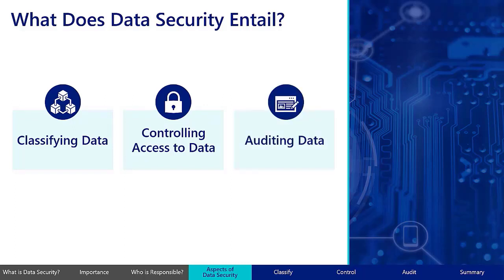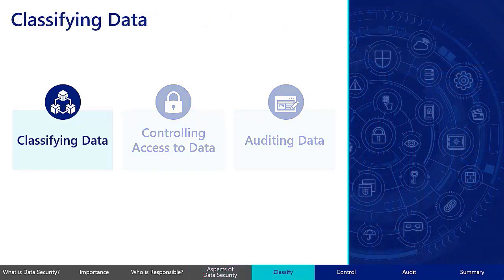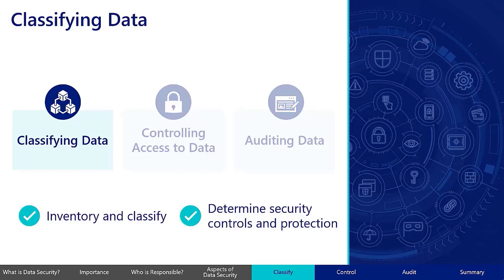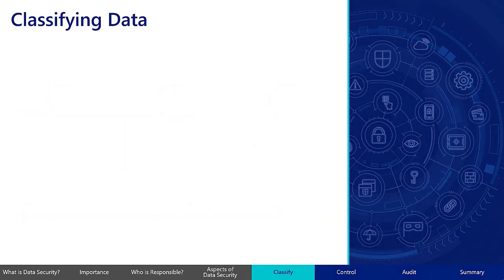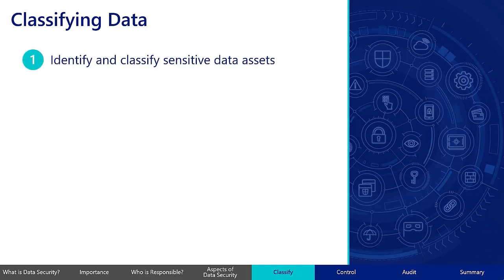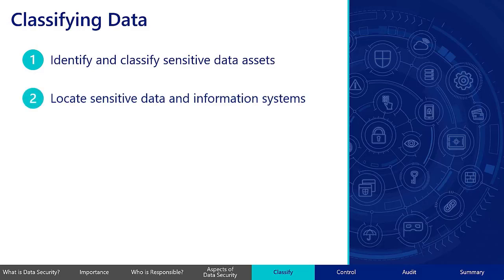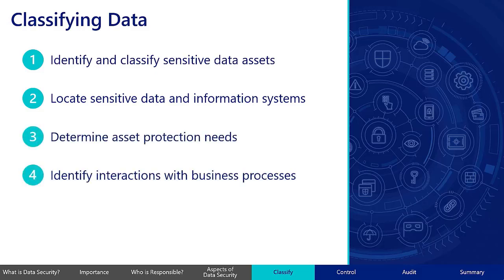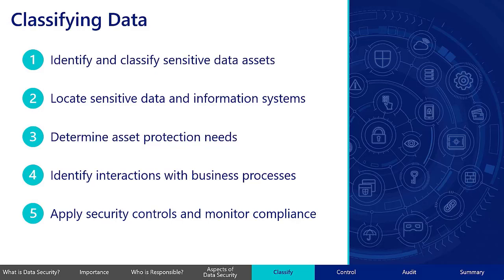Let's talk about each of these aspects. Data security begins by inventorying and classifying an organization's data to determine the applicable security controls and protections for the data. The overall process includes: identify and classify sensitive data assets; locate sensitive data and information systems throughout the organization; determine how each asset needs to be protected; identify how this information interacts with business processes; and apply appropriate security controls and routinely monitor the protections to ensure they are compliant.